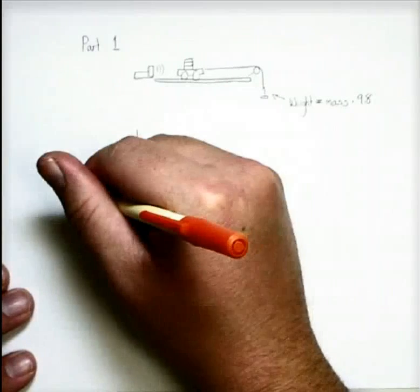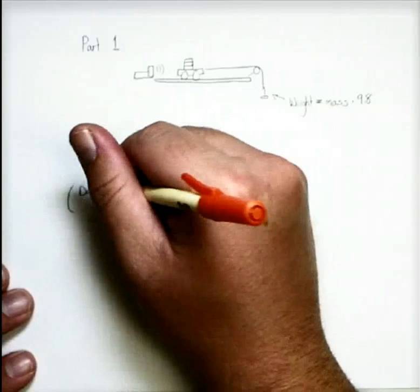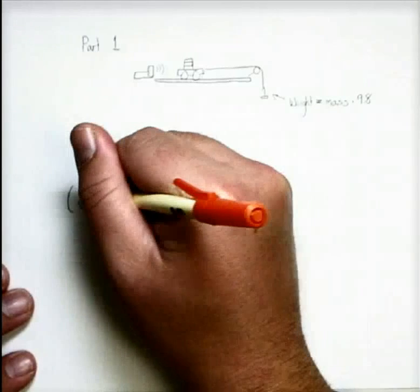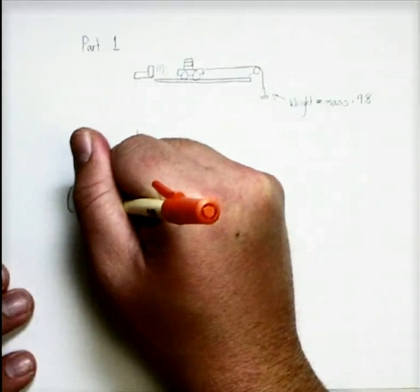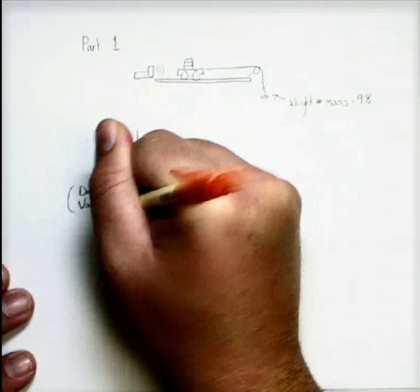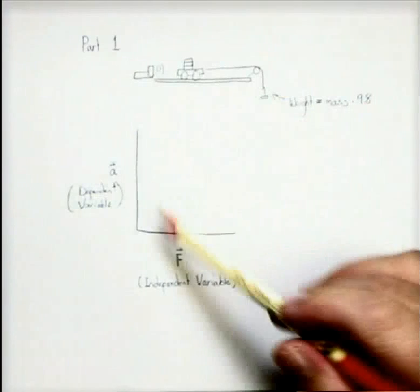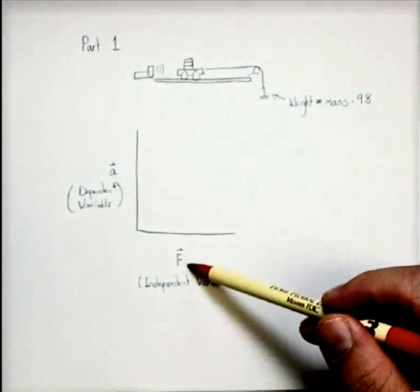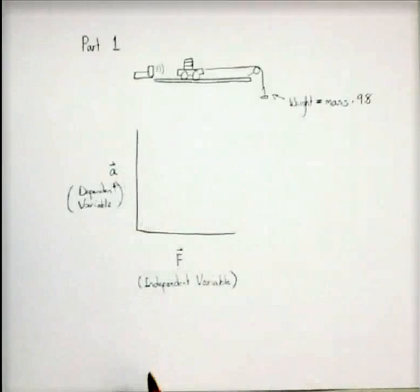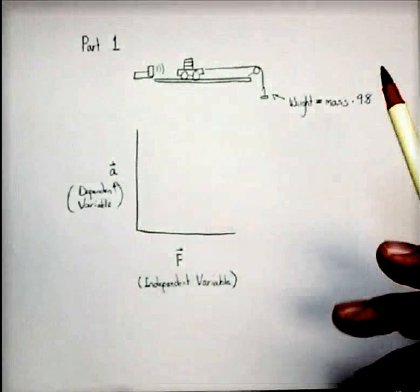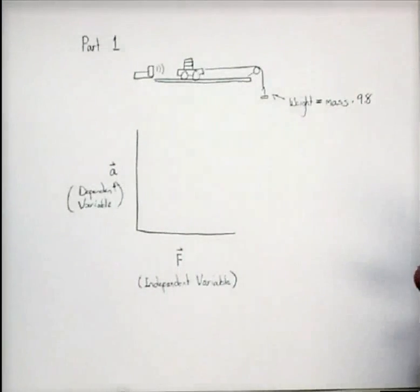My spelling inability has just kicked in there. The dependent variable. So whatever we do to the independent variable, we'll change the dependent variable somehow. And we're trying to figure out how that is. That's the whole purpose of the experiment.